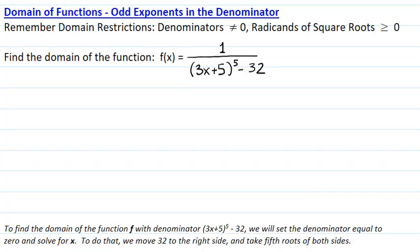To find the domain of the function f with denominator (3x + 5)^5 - 32, we will set the denominator equal to zero and we will solve for x.